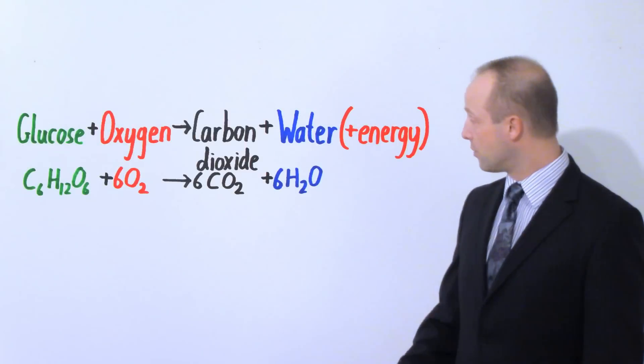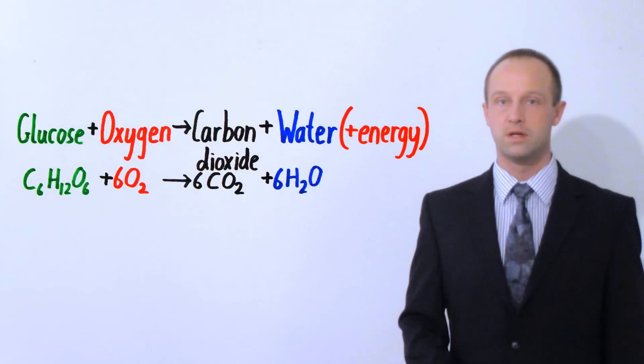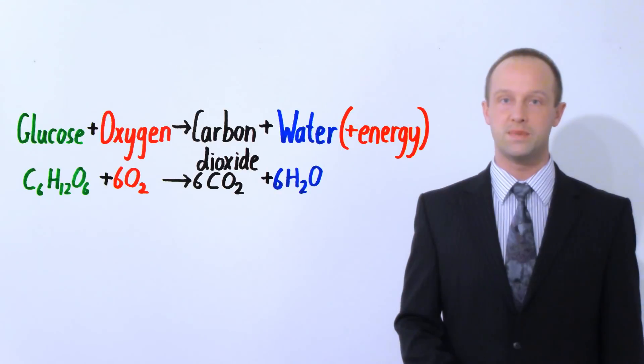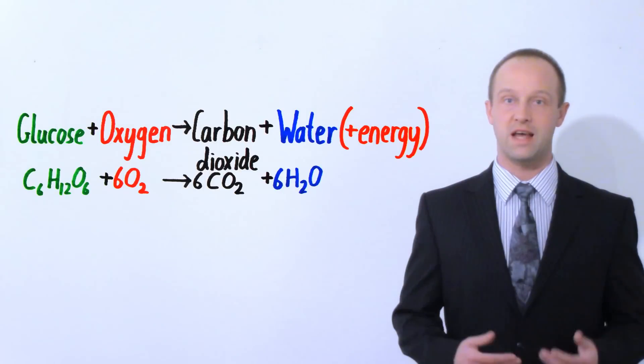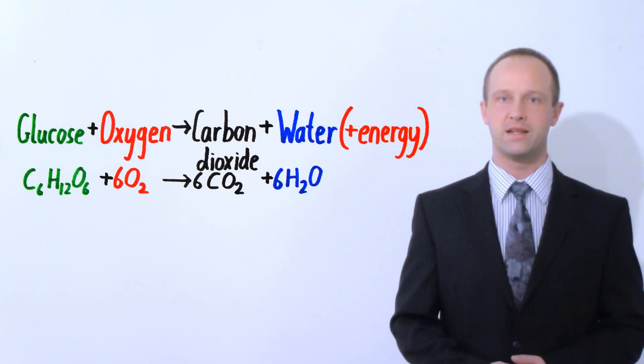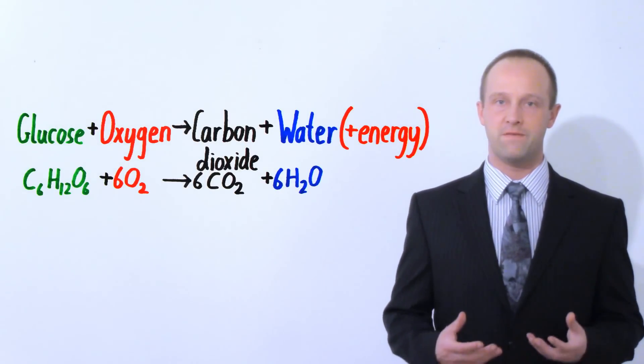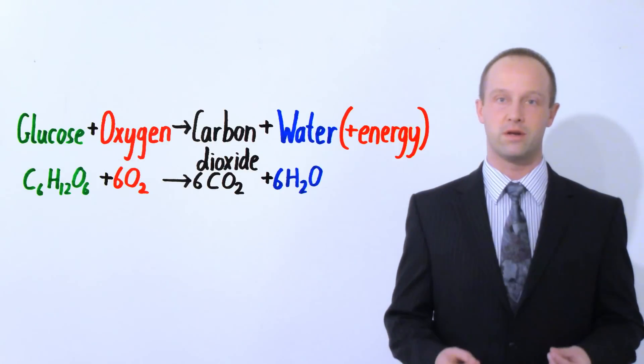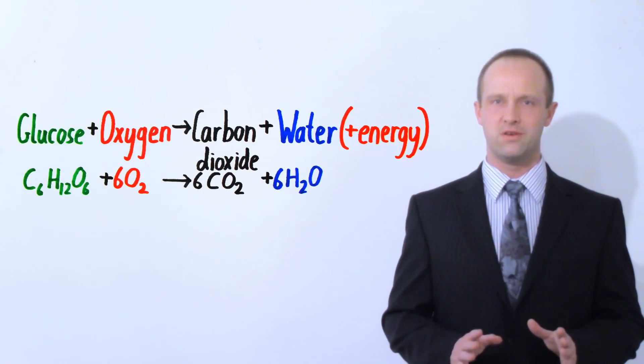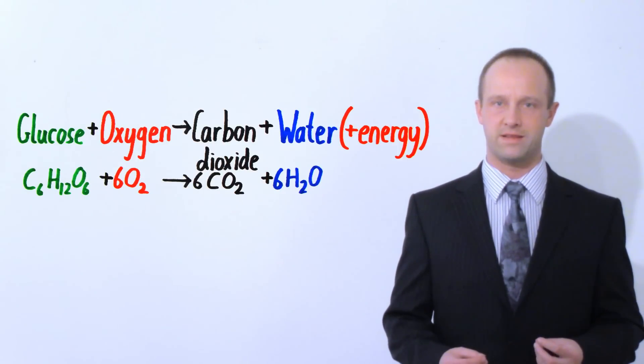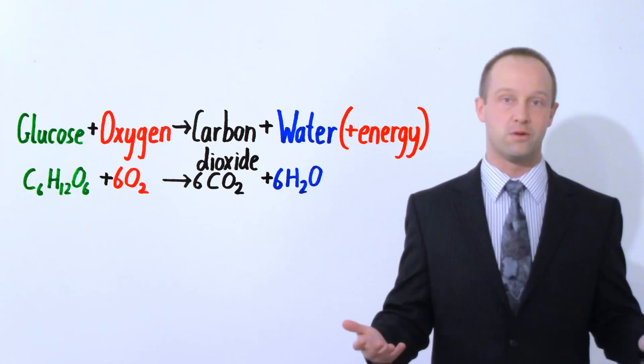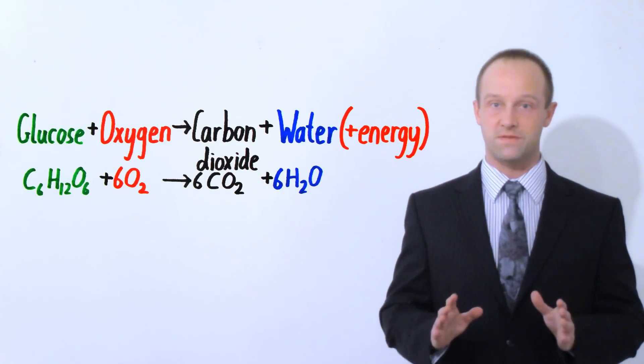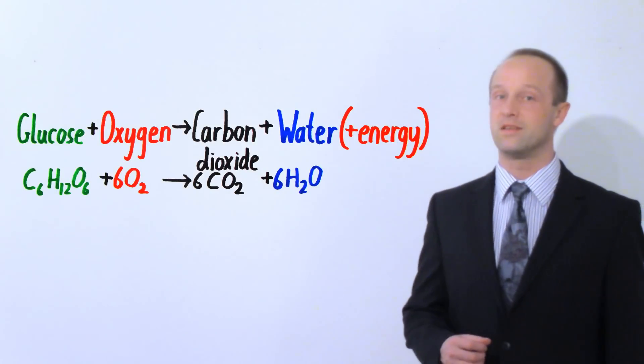The reaction can be represented with this equation. Glucose plus oxygen gives carbon dioxide and water and energy. So there's energy being released. Energy is in brackets there because energy isn't a physical substance of course. It's not a chemical. So it's a little bit unusual to see it in a chemical reaction like this but because it's such an important part of this reaction because that's the whole point of respiration it's often included in brackets in this way.